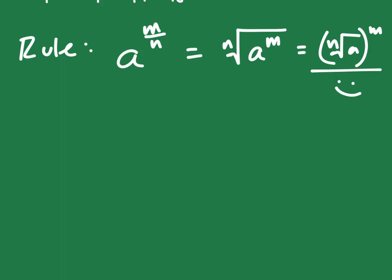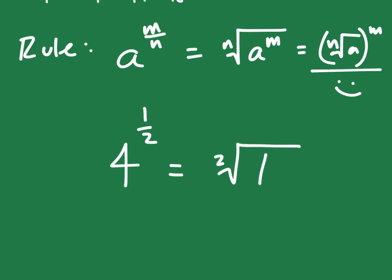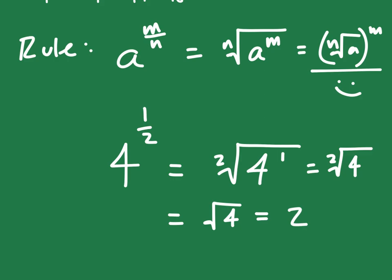Let's go back to our problem and raise four to the one-half power. Using the rule, you can rewrite this as a radical — you take the square root of four to the first power. Four to the first power is just four, so we're taking the square root of four. We ask ourselves: what two numbers multiplied by themselves give you four? And that brings you back down to two.